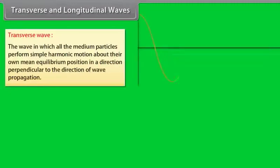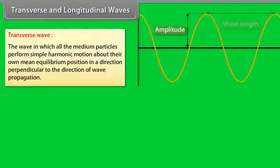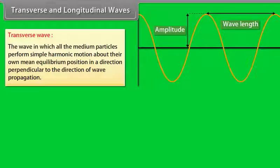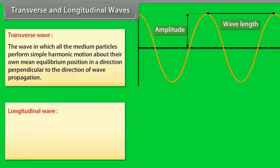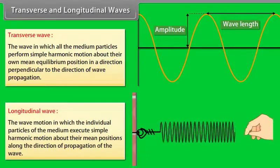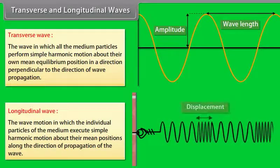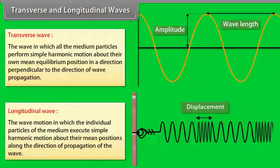A transverse wave is the wave in which all the medium particles perform simple harmonic motion about their own mean equilibrium position in a direction perpendicular to the direction of wave propagation. Longitudinal wave motion is that wave motion in which the individual particles of the medium execute simple harmonic motion about their mean positions along the direction of propagation of the wave.